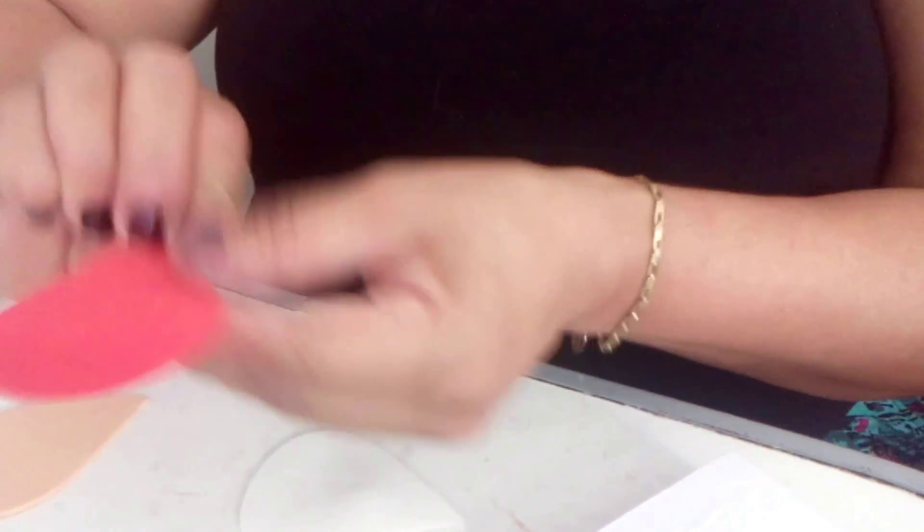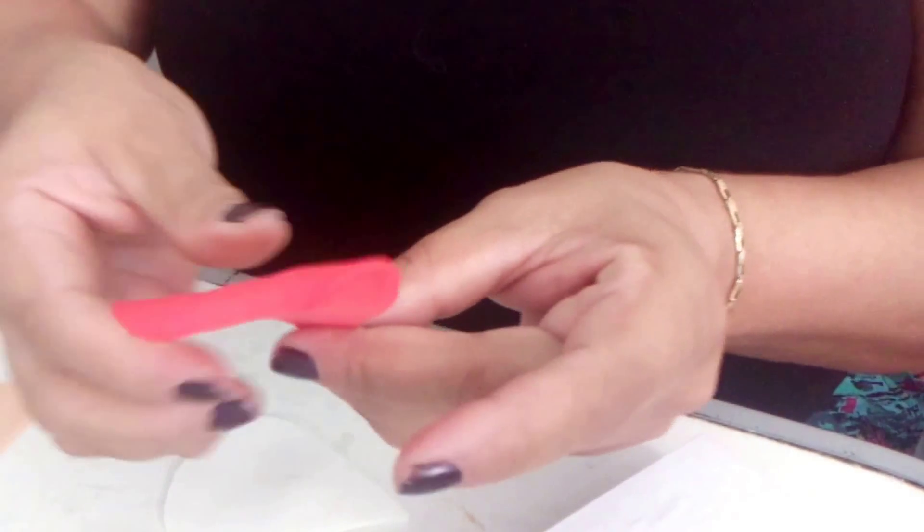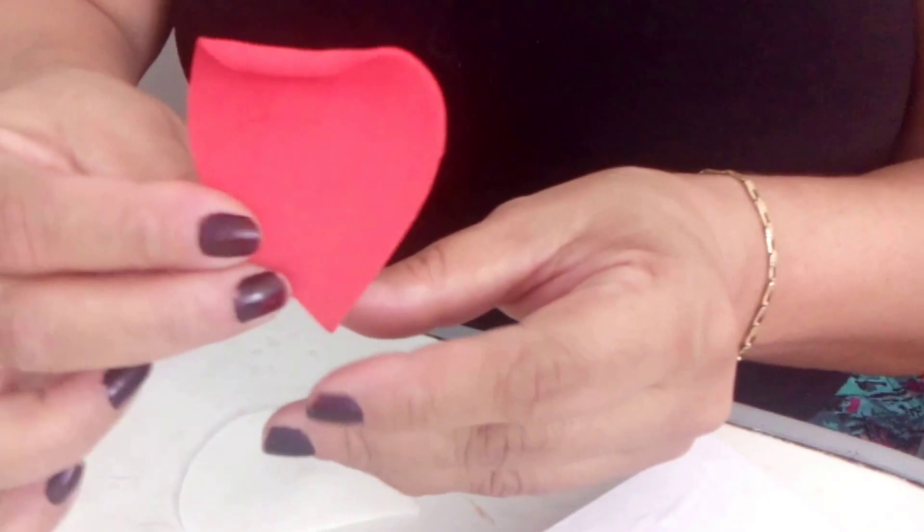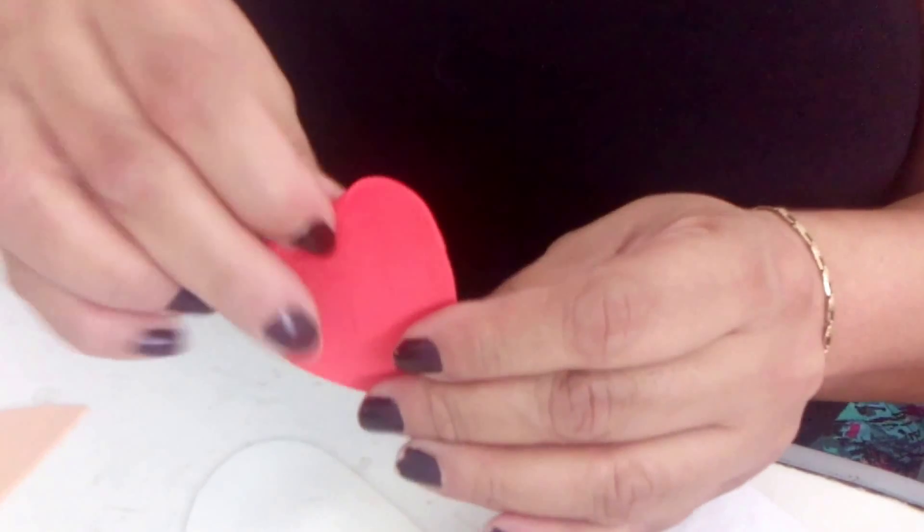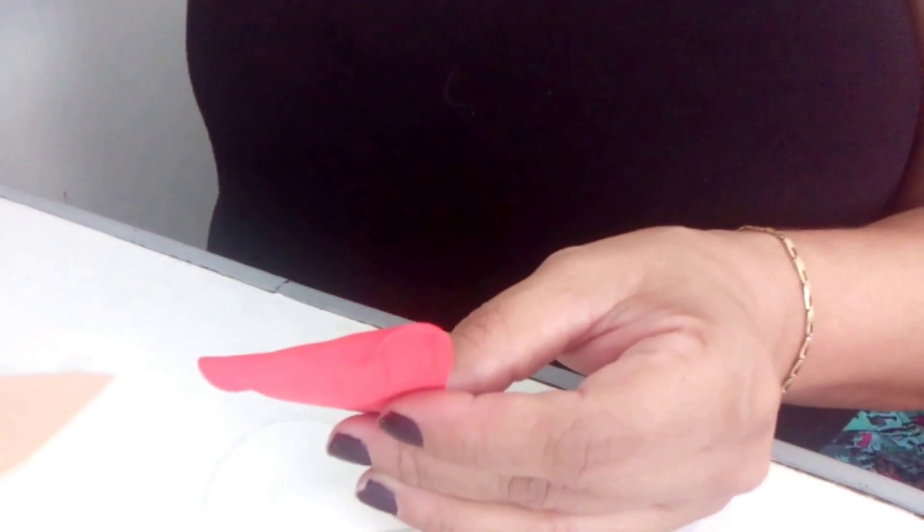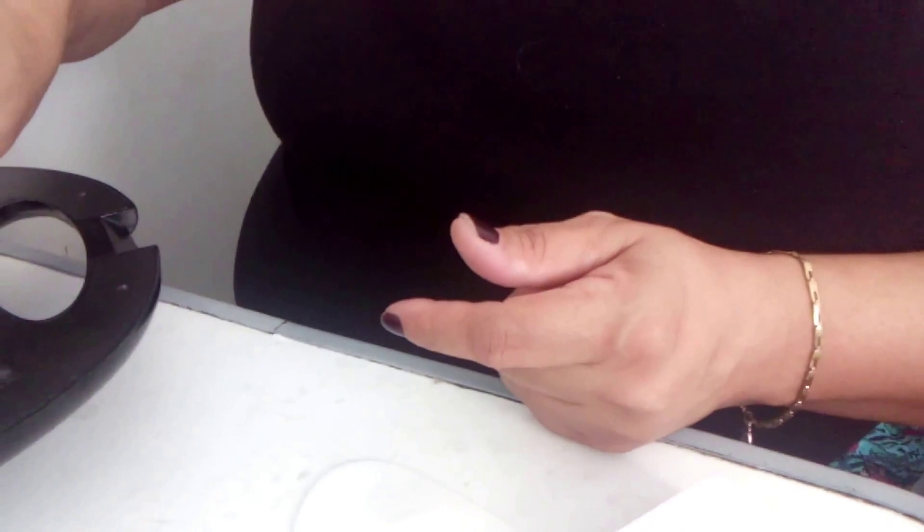I heat just the tip, and fold it like this. Then I'll close it here. I'll repeat with white EVA. I heat the tip, this tip here in the sandwich maker.